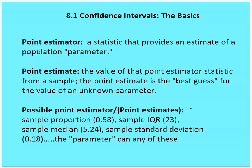Let's talk about point estimators and point estimates. A point estimator is a statistic that provides an estimate for a population parameter — that parameter could be a proportion. A point estimate is the value of that point estimator statistic, and it is the best guess for the value of the unknown parameter. For example, the sample proportion would be the estimator, and 0.58 would be the estimate.